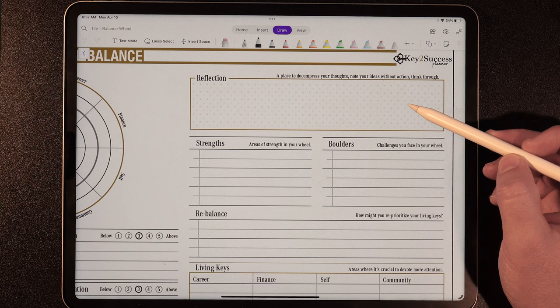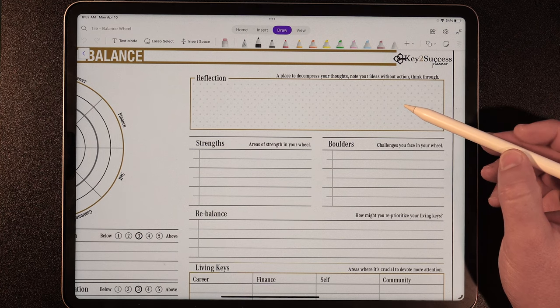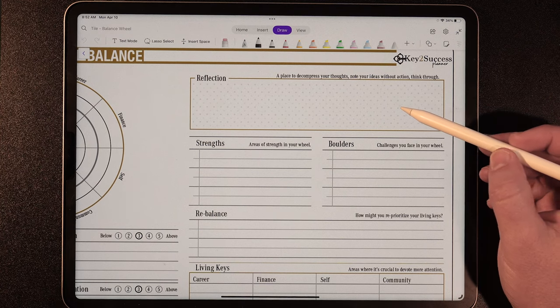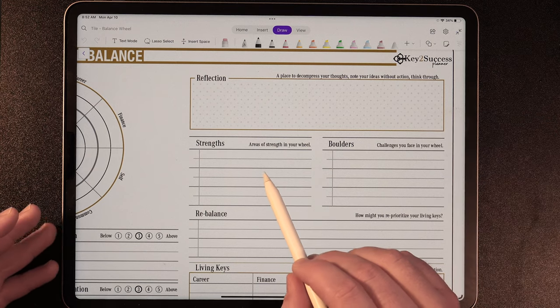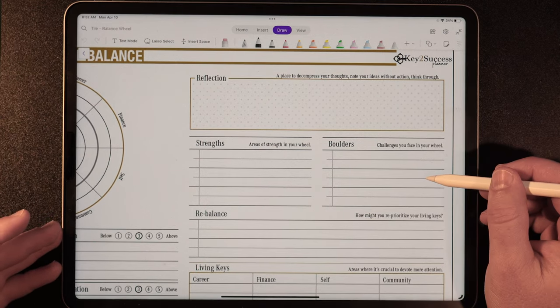From there, once we complete the balance wheel, we have the opportunity to reflect. Give us an opportunity to decompress any thoughts without taking any action. I just want you to look at it and say, what does this balance wheel tell you?